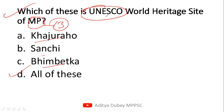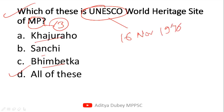Some more facts about UNESCO: if you are asked about its establishment date — UNESCO's foundation date — the answer is 16th November 1946. UNESCO was established on 16th November 1946. If asked about its headquarters, that is in Paris.